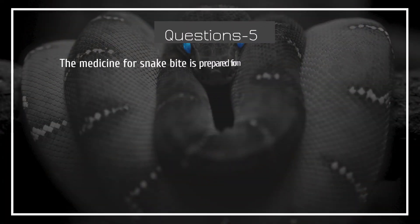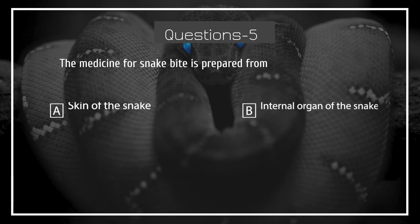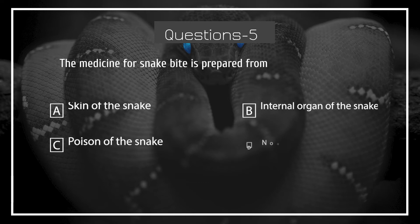The medicine for snake bite is prepared from — Options: skin of the snake, internal organ of the snake, poison of the snake, none of these.